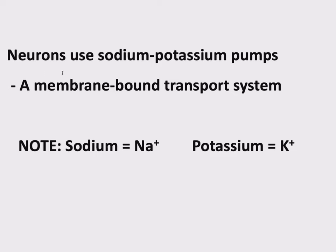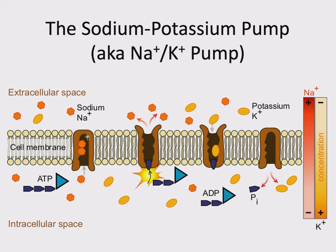Neurons use something called a sodium-potassium pump — a membrane-bound transport system. A quick chemistry review: sodium is Na, it has a positive charge; potassium is K, it also has a positive charge. We'll see figures that use Na and K. The sodium-potassium pump is embedded in the cell membrane of a neuron, and it pumps three sodium atoms out and two potassium in.